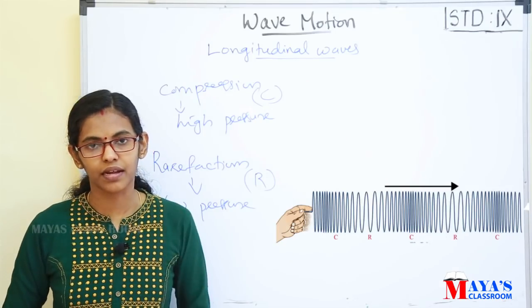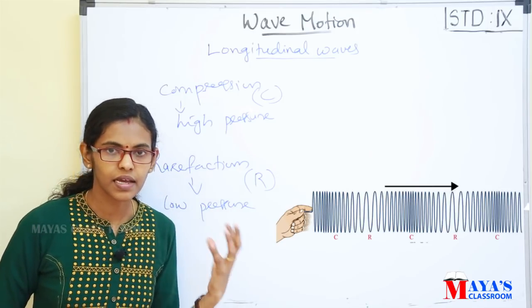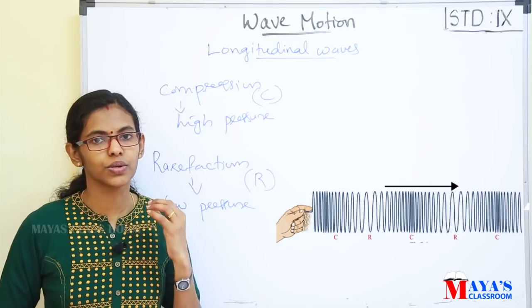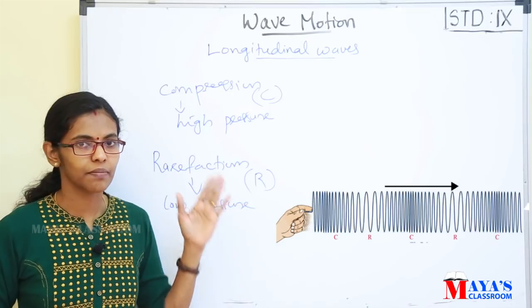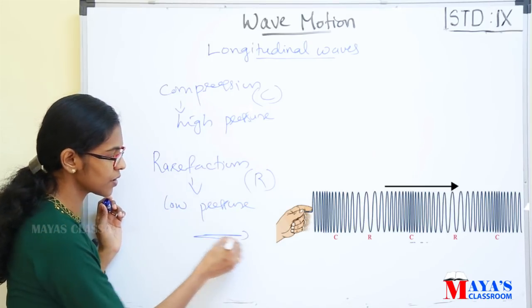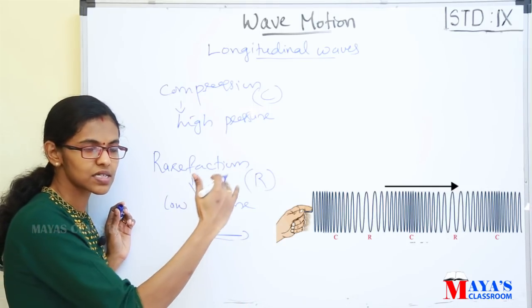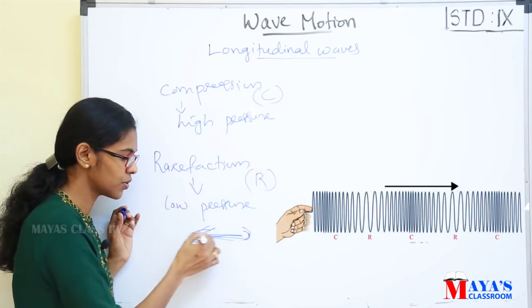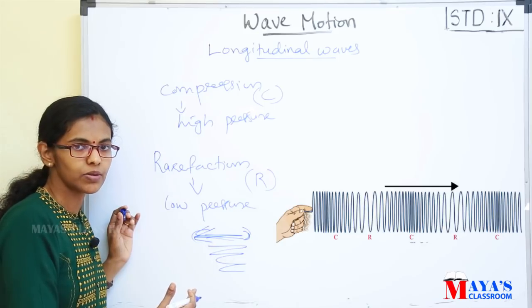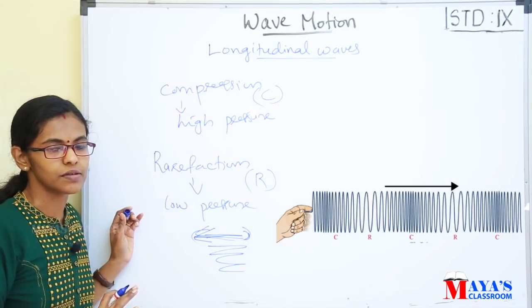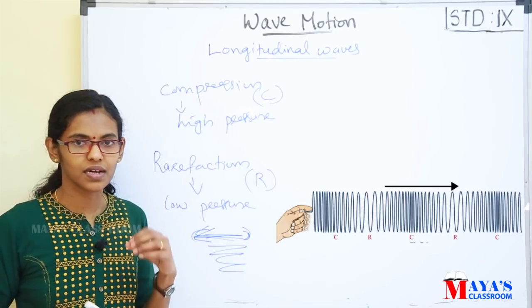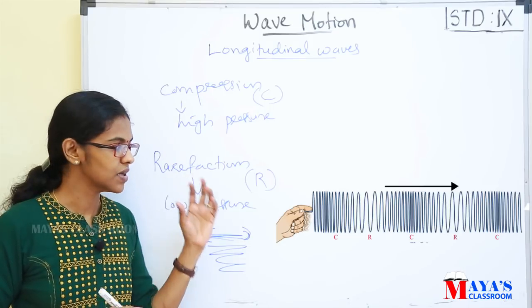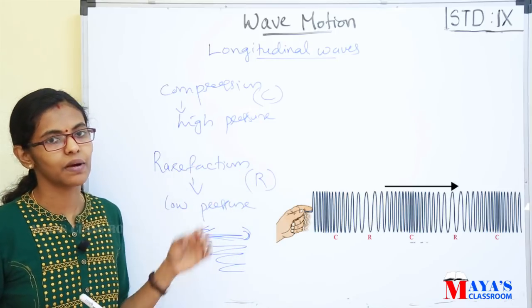It is called the compressed area and the rarefaction area. It is called the longitudinal wave. Now, particles vibrate at the same time and move in the same direction. In longitudinal waves, it is moving in the same direction, parallel. That is longitudinal waves. Longitudinal waves are the waves in which the particles of the medium vibrate in a direction parallel to the direction of the propagation of the waves.